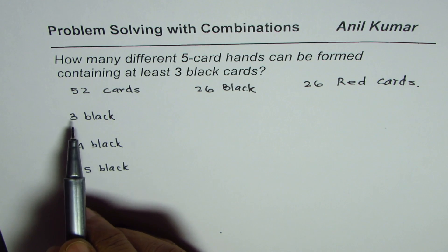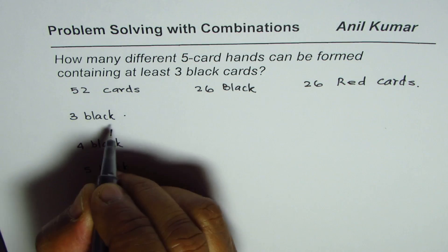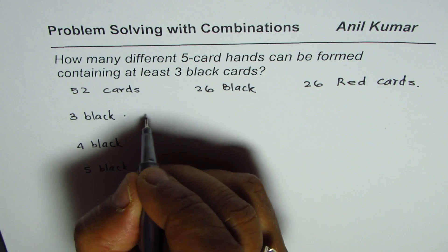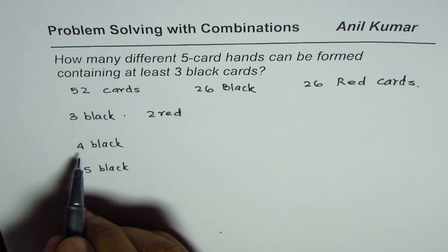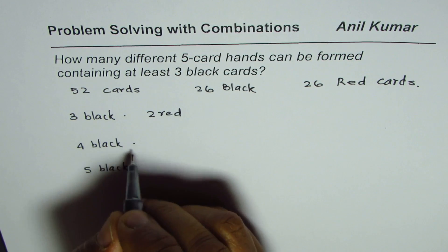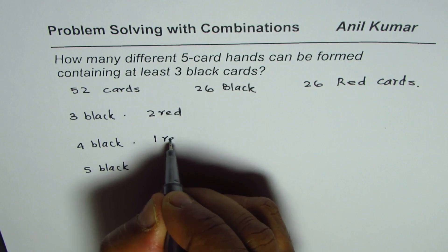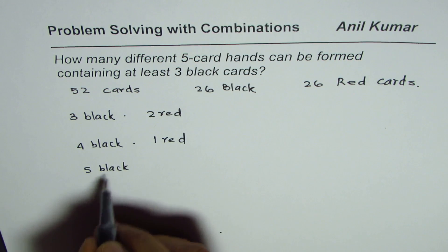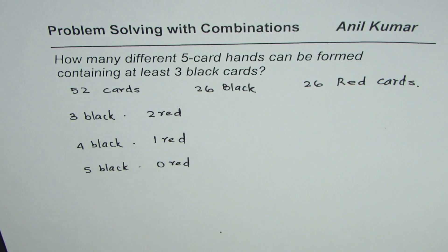Since we need a total of five cards, in the first case, when I say three black cards, it means three black cards and two red cards. Here, four black and, the operation is and, so I'm writing a dot for multiplication, and one red card. And then five black cards means zero red card. So the combination gives you five cards in a hand.